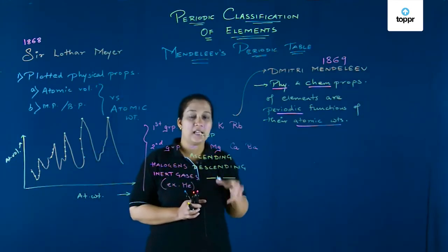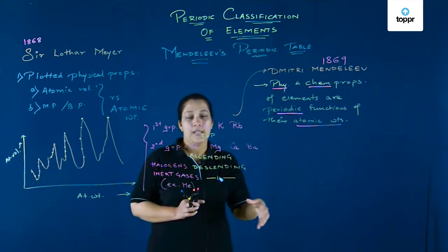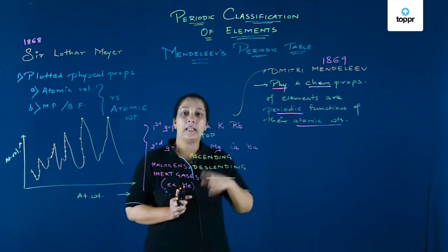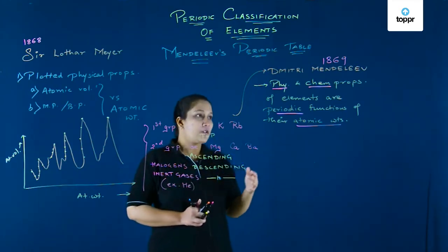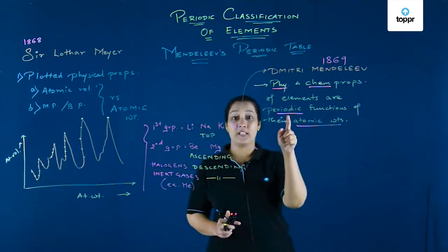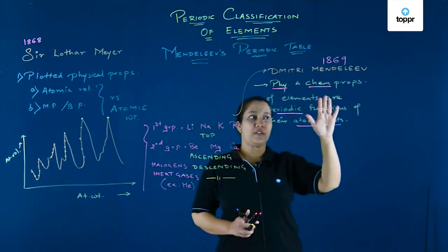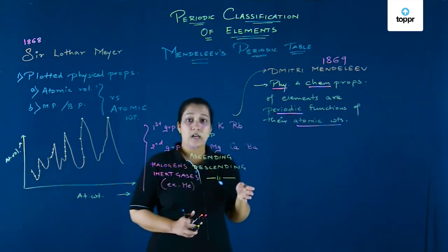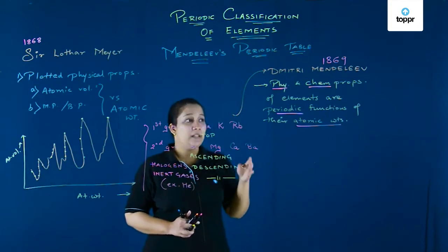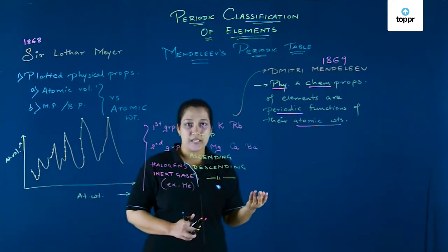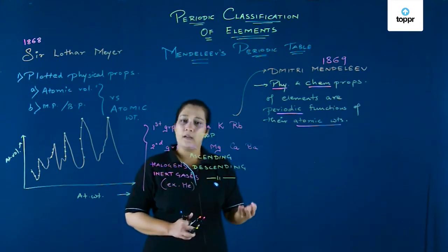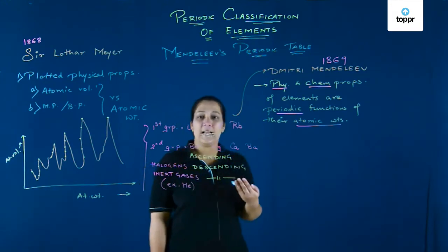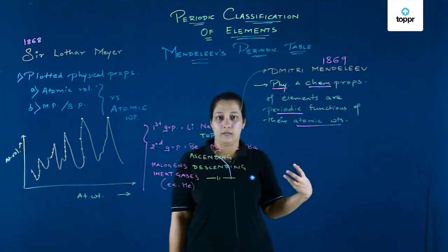This meant that when elements are arranged in increasing order of atomic weights, there is a kind of repeatability seen in some set of elements — not every two, three, or eight, but there is a repeatability. Physical and chemical properties of elements are periodic functions of atomic weights, meaning after a certain period, there is a repeatability of some physical or chemical properties.